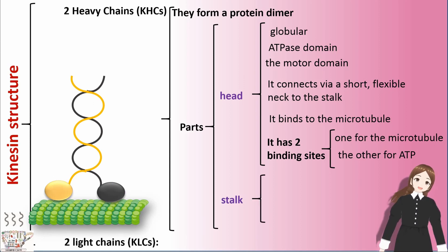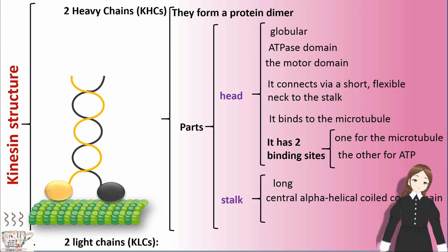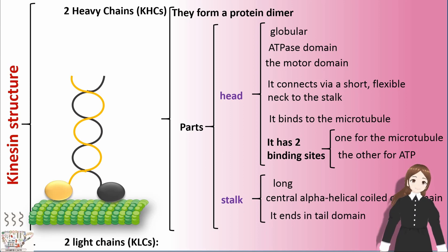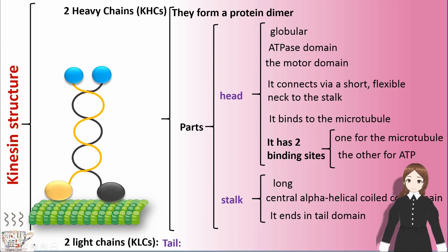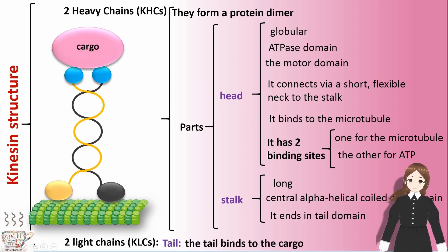Stalk. The stalk is a long, central alpha-helical coiled-coil domain. It ends in a tail domain. Light chains are named tail. The tail binds to the cargo.